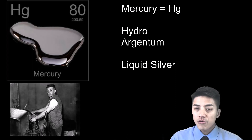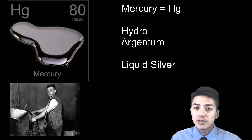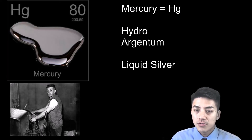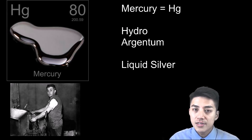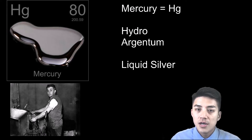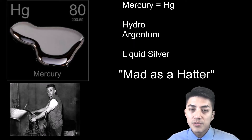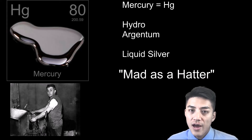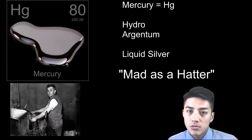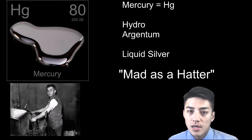The symbol for mercury is Hg, which is derived from hydro — which we learned already from hydrogen — and argentum, which you learned for silver. So when you put the two words together, hydro and argentum, you get liquid silver, because that's what mercury is at room temperature: it's a liquid metal. The phrase 'mad as a hatter' comes from the fact that hat makers used to work in close proximity with mercury, which was involved in the hat-making process. Mercury gives off really toxic fumes, and breathing it in causes neurological disorders.